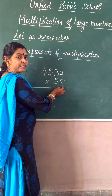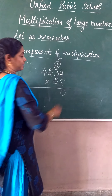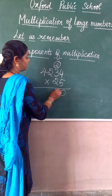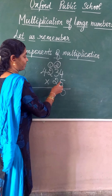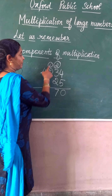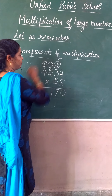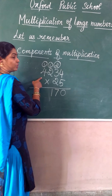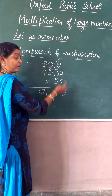5 times 4 is 20 — a 2-digit number, so 0 stays and 2 is carried forward to the next step. 5 times 3 is 15, plus 2 carried forward is 17. Again carry forward 1. 5 times 2 is 10, plus 1 is 11. So carry forward 1. 5 times 4 is 20, plus 1 is 21. Wait — 4 times 5 is 20, plus 1 is 25. So I got the first partial product.